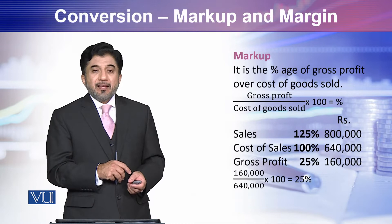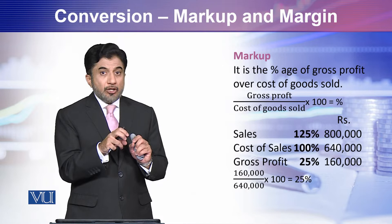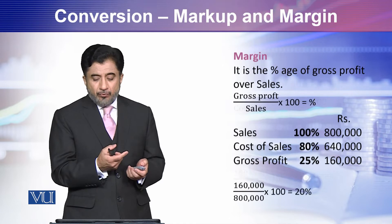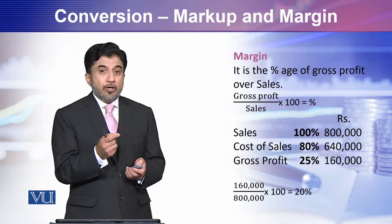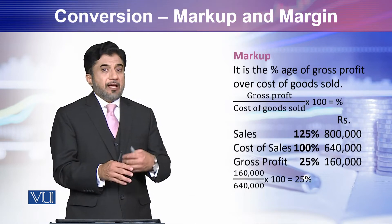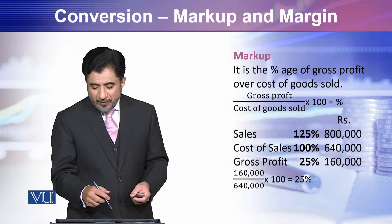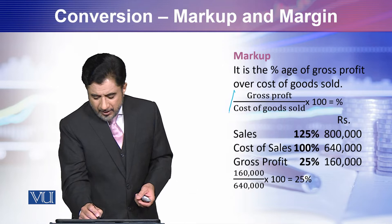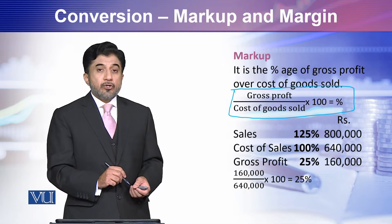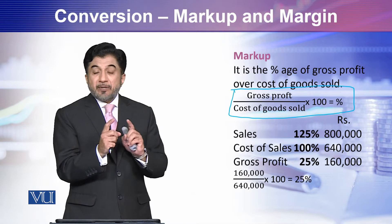What is markup? Markup is the rate of gross profit on cost of goods sold, and margin is the rate of gross profit on sales. First I will discuss markup, and then we will see how to work out margin. The basic formula is that gross profit is divided by cost of goods sold and multiplied by 100 to get the percentage.